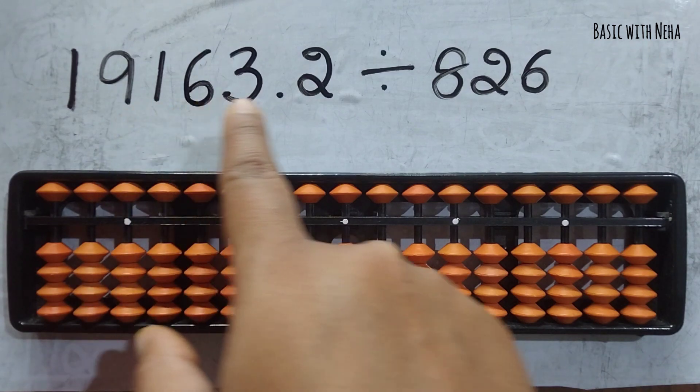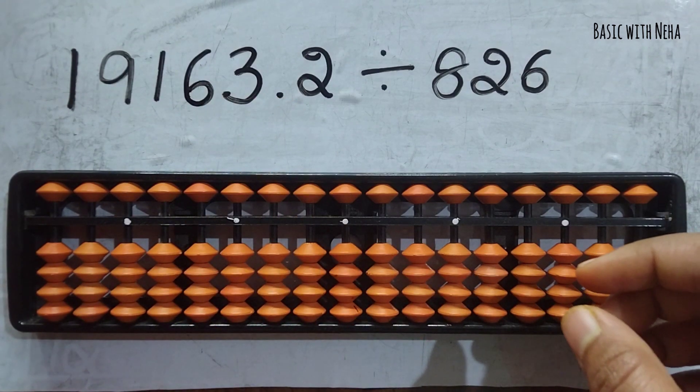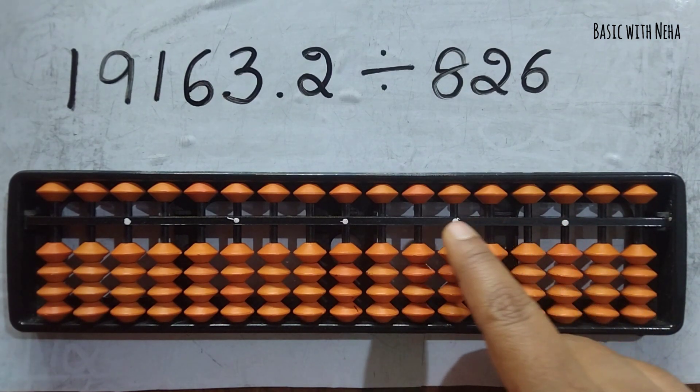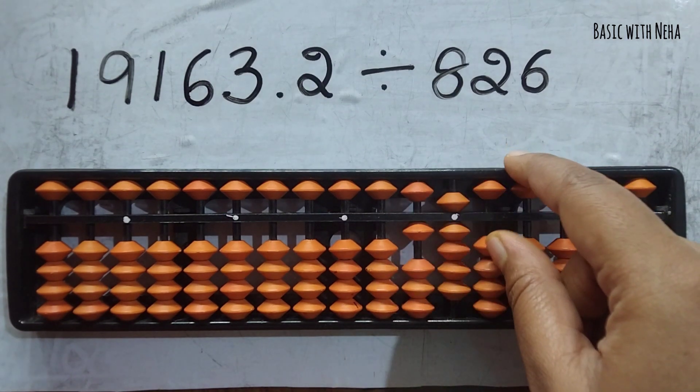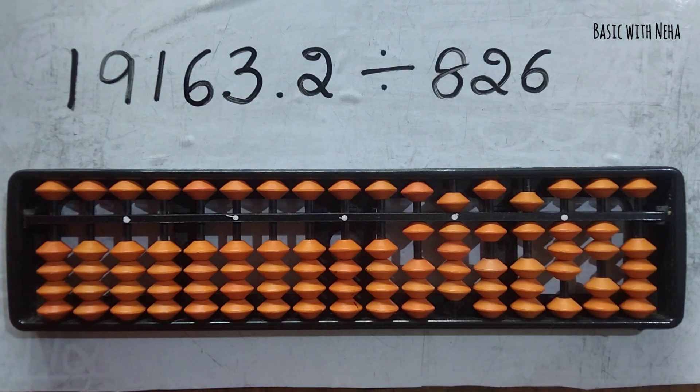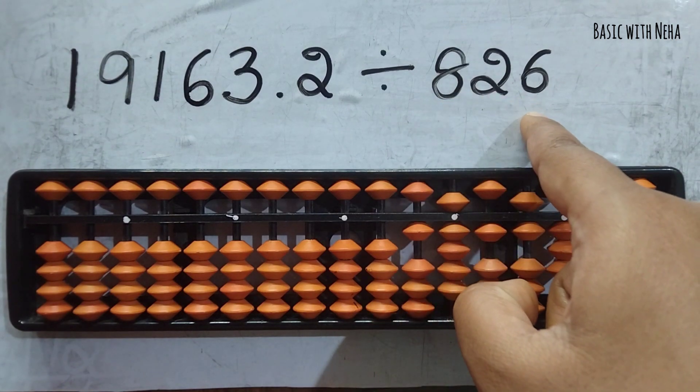I'm going to place this dividend on my tool in such a way that I'm able to recognize the decimal place. I'll keep this as the decimal point and place the number from here: 19163.2. This is my question part and I know that this is the divisor.